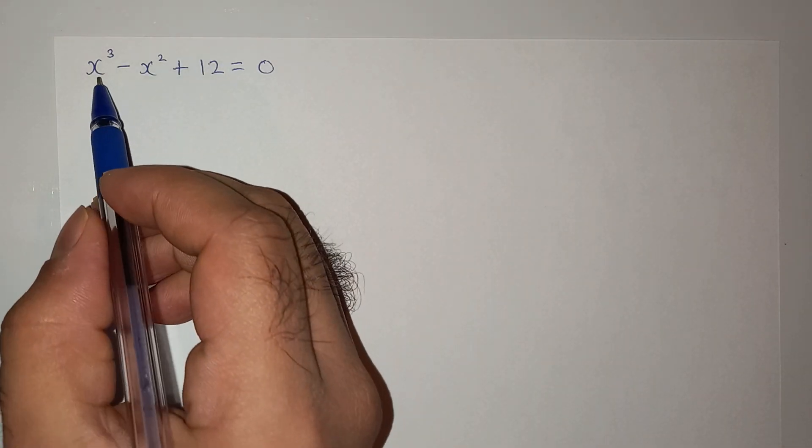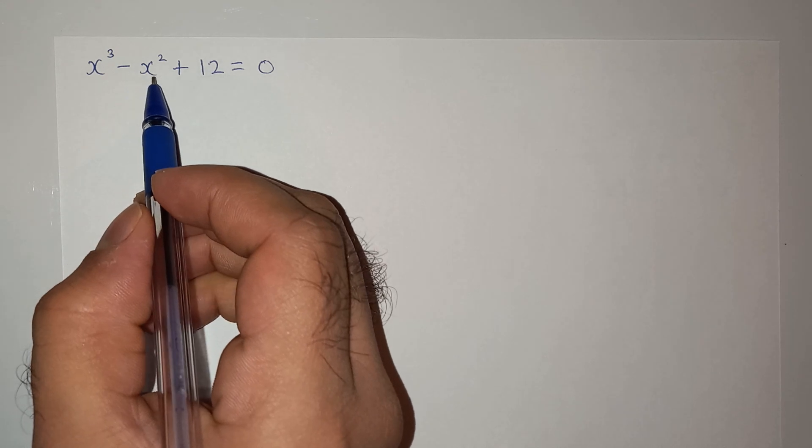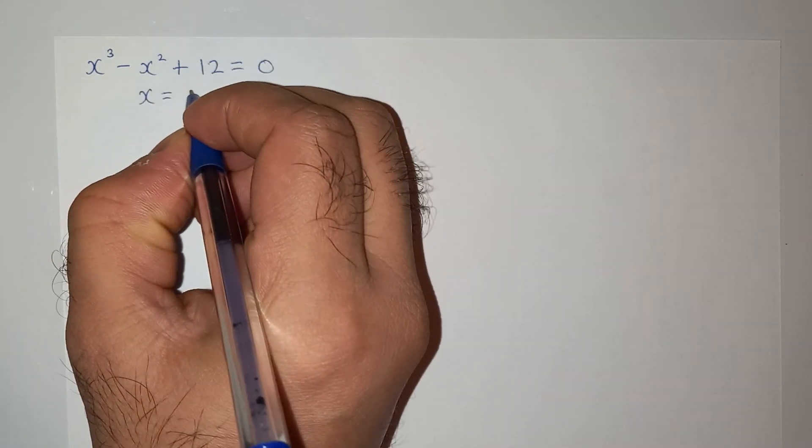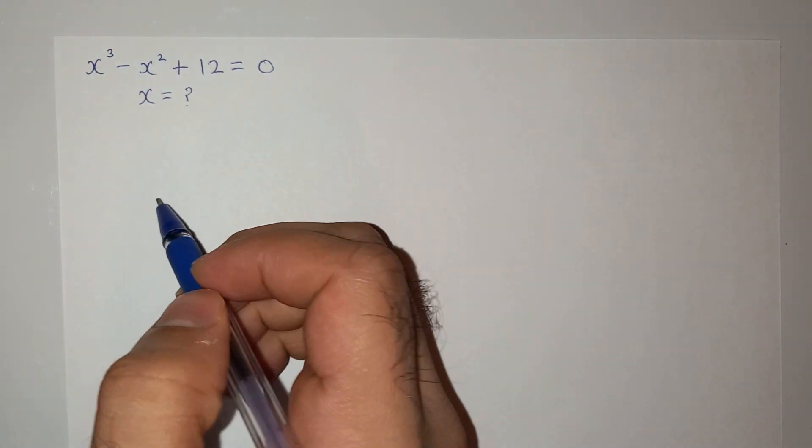Hi guys, welcome back to your channel. We have this question: x cubed minus x squared plus 12 equals to 0, and we have to find the value of x. So let's try to solve this equation.